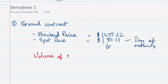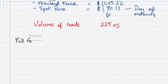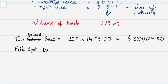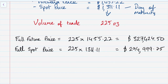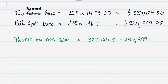The volume of gold being sold in this example is 225 ounces. So the full forward cost is 225 multiplied by $1,455.22, which gives a total of $327,424.50. We do the same for the spot price: 225 multiplied by $1,311.11, which gives us $294,999.75. Based on that we can work out the profit, which is the forward price minus the spot price, giving us a profit of $32,424.70.